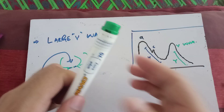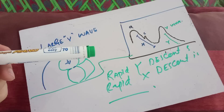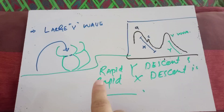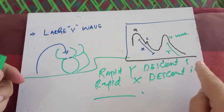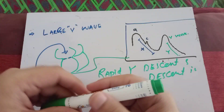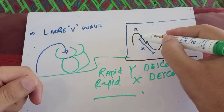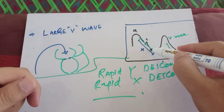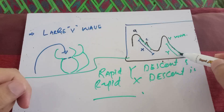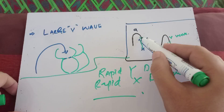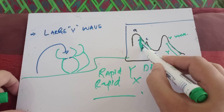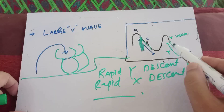There is another MCQ: rapid Y descent and rapid X descent. This is the normal X descent and this is the normal Y descent. Rapid means if the Y descent becomes very steep — that is a rapid Y descent.